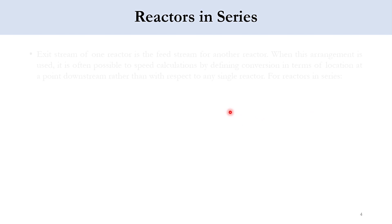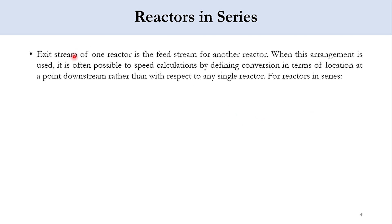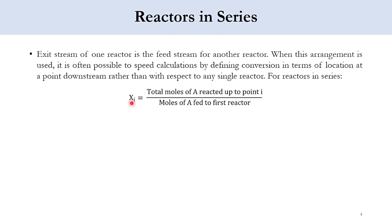Now, starting with reactors in series: the exit stream of one reactor will be the inlet stream for the next reactor. The outlet of the first reactor is the inlet of the second, and so on. We define conversion Xi as the total moles of A reacted up to point i divided by the moles of A fed to the first reactor.